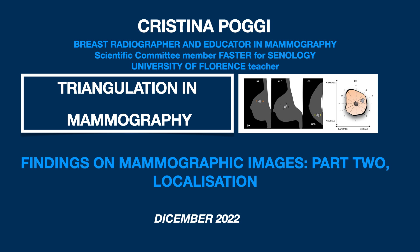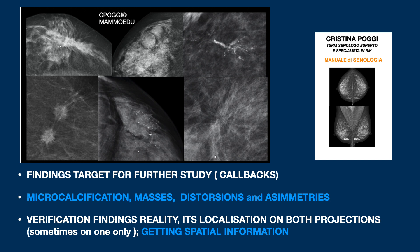Hello everyone. We are now at the second lesson on how to locate a lesion on mammography images. We saw in the first lesson how difficult it actually is to locate exactly a lesion, and also how it appears and therefore the degree of suspicion of that lesion is related to the quality of the breast radiographer's work. Last lesson we showed a few examples of lesions that can be cut targets for further study or callbacks, which will be described in more detail in lesson 3.